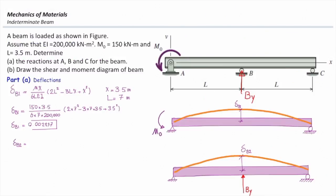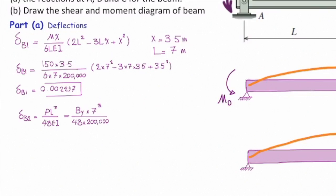In the second beam, it would be this equation, PL cubed over 48EI. The force is now BY. That is unknown. That's what I'm looking for. So I will call that BY, plug the other parameters in that equation, and that simplifies into BY divided by 27990.